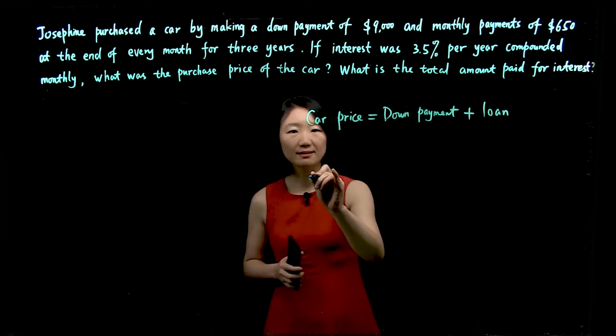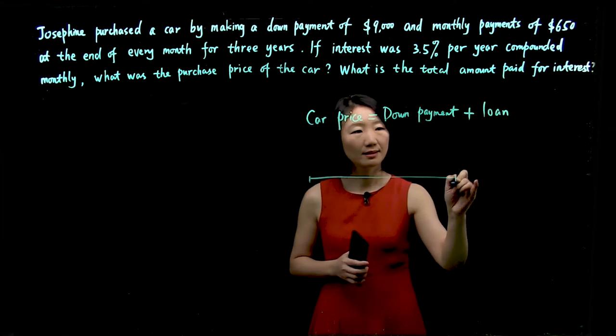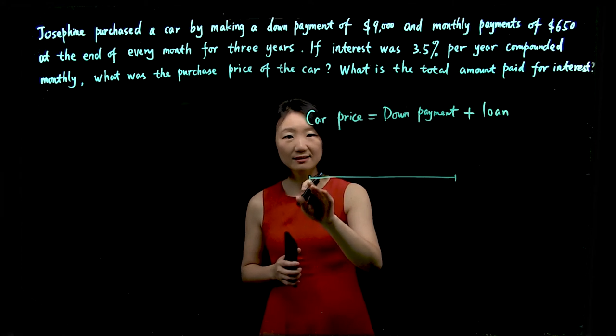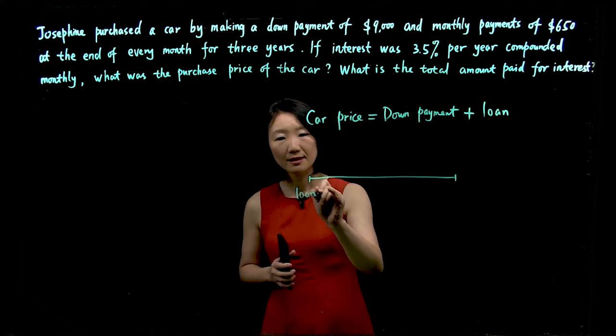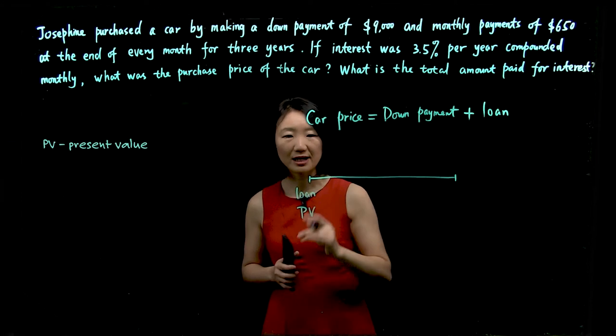Let's draw a timeline. The day Josephine purchased the car, that's also the day she received the loan. This loan amount is the present value.